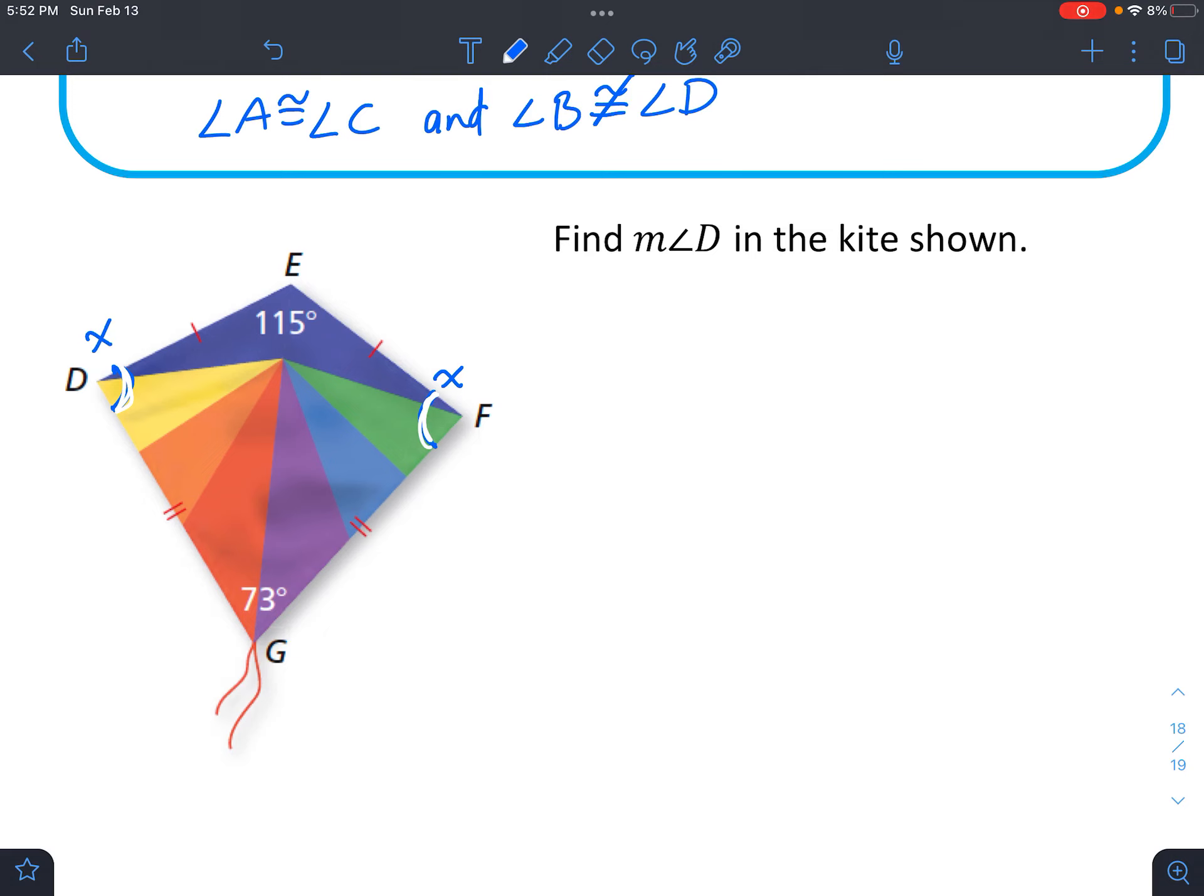So each of these are equal to X. So we could say I have 2X plus 115 degrees plus 73 degrees. And because it is a type of quadrilateral, we know that they all add up to 360. So go ahead and combine your 115 and 73 to get 188.